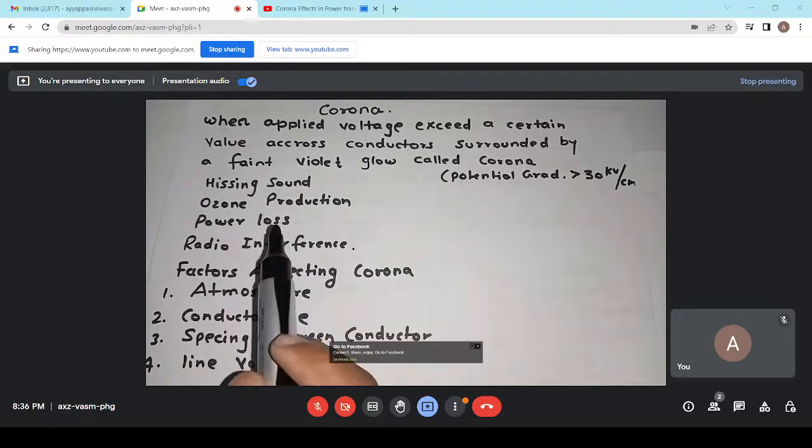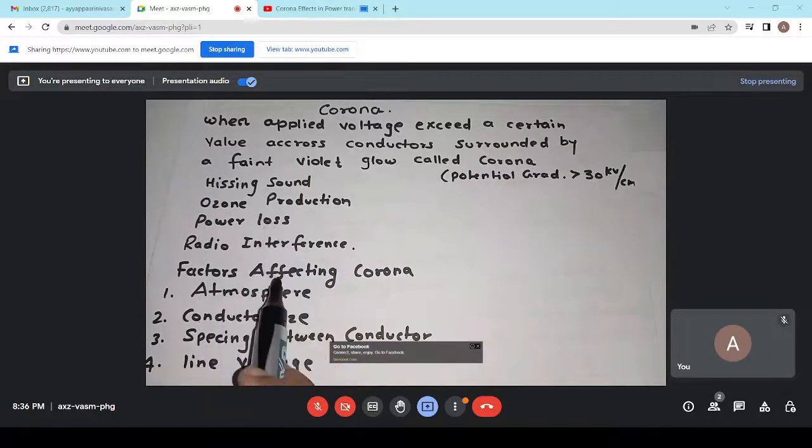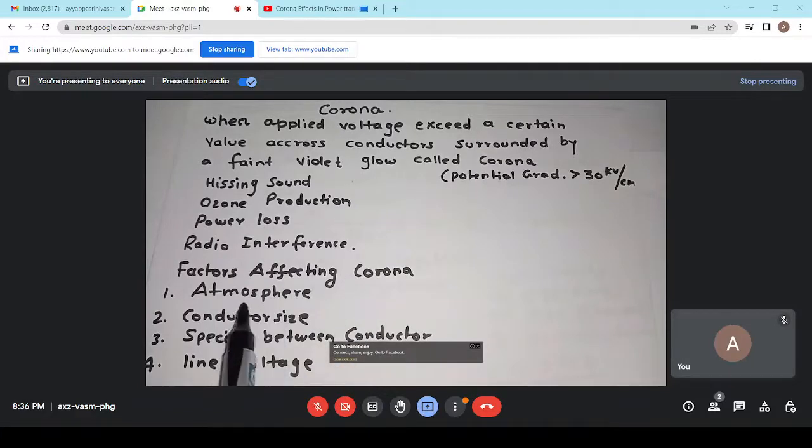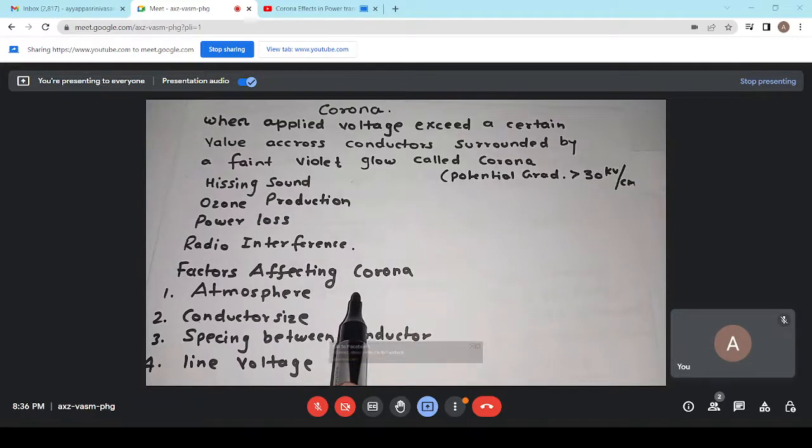So, we will see here that corona, the factors which affect the corona. First is atmosphere. In storming weather, corona occurs at much less voltage as compared with fair weather. In moisture, if weather having some moisture content, corona chances will be more.